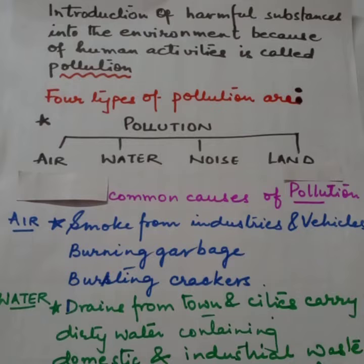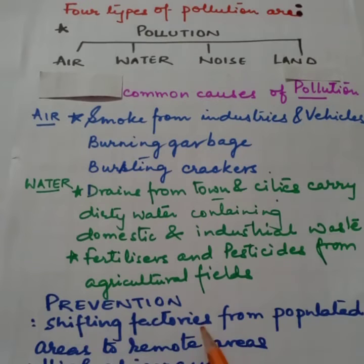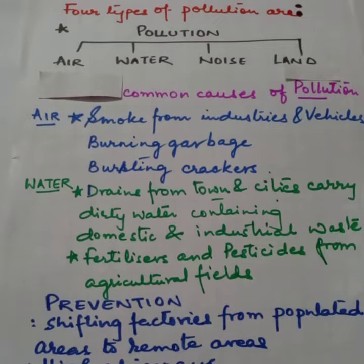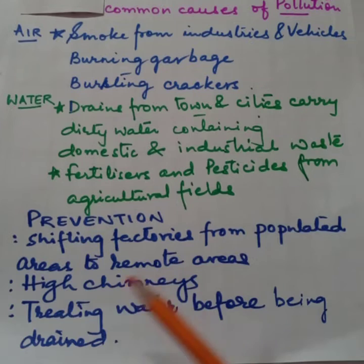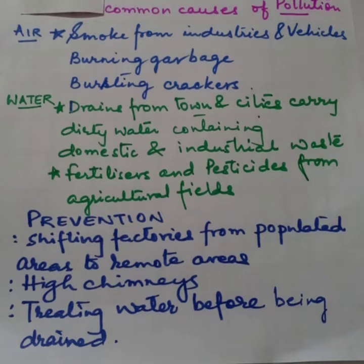Prevention: shifting factories from populated areas to remote areas — जहां बहुत ज़्यादा लोग रहते हैं, वहां से factories को shift करके ऐसी जगह पर लेकर जाओ जहां इंसान नहीं रहते हैं या कम रहते हैं। High chimneys — factories में या जहां से भी धुआं निकलता है, वहां लंबे-लंबे chimneys डाल देते हैं, ताकि धुआं बहुत ऊपर जाए, और उससे थोड़ा pollution कम होगा।